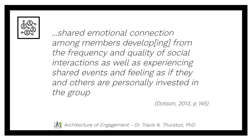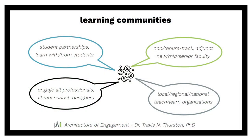But it's not complete — that's the architecture. As Dotson explains, an architecture of engagement should provide for shared emotional connection among members, developing from the frequency and quality of social interactions, as well as experiencing shared events and feeling as if they and others are personally invested in the group. That's the engagement. So we need to consider which types of learning communities we're including in this architecture. And we need to start with our students — thinking about learning communities in terms of student partnerships, and how we as instructors can learn with and from our students.